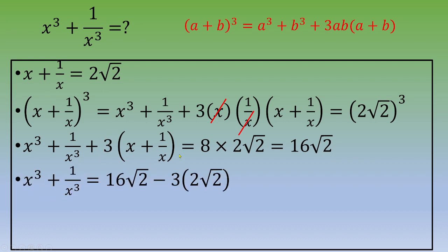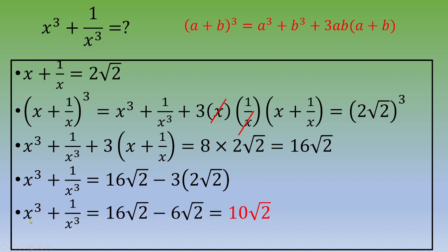Next, we move the remaining term to the other side. So x cubed plus 1 over x cubed equals 16 square root of 2 minus 3 times (x plus 1 over x). Plugging in the value x plus 1 over x equals 2 square root of 2, we get x cubed plus 1 over x cubed equals 16 square root of 2 minus 6 square root of 2, which gives a final answer of 10 square root of 2.